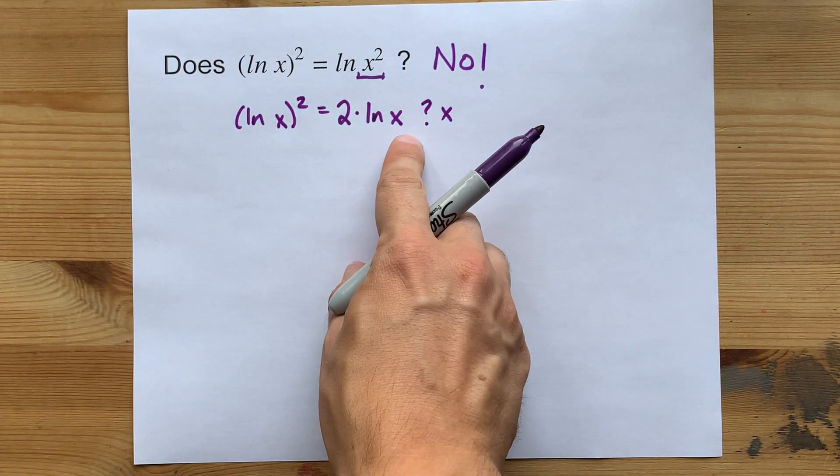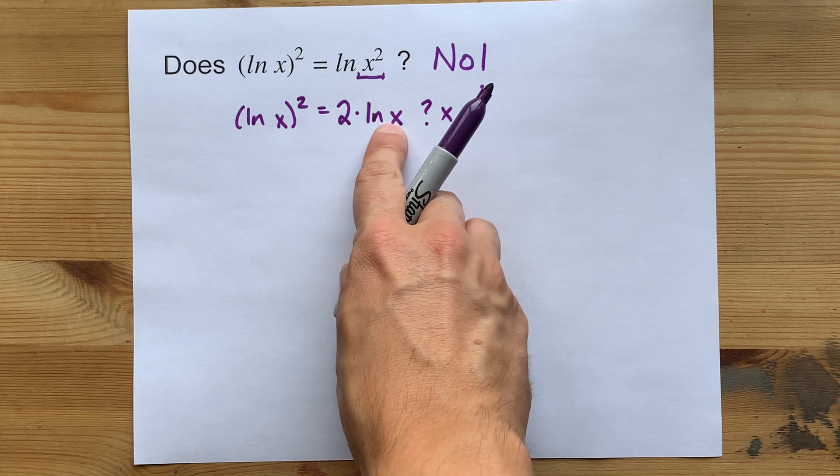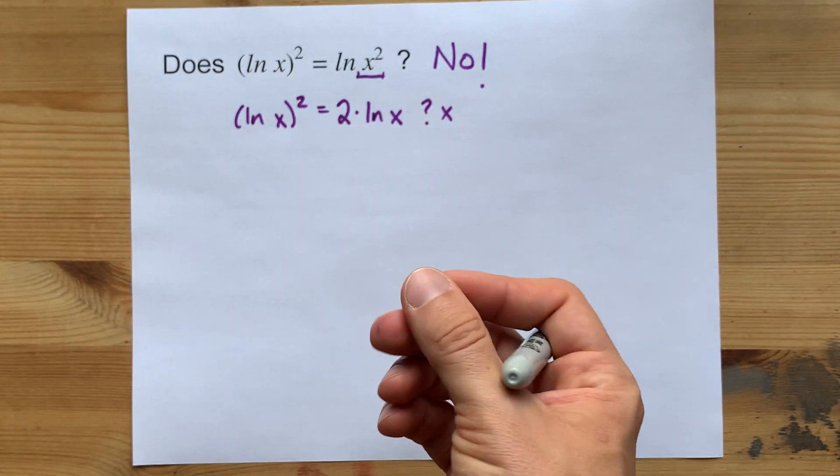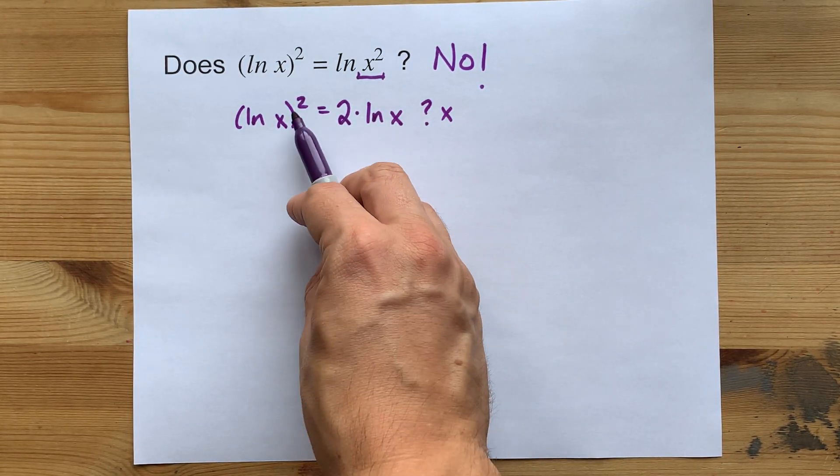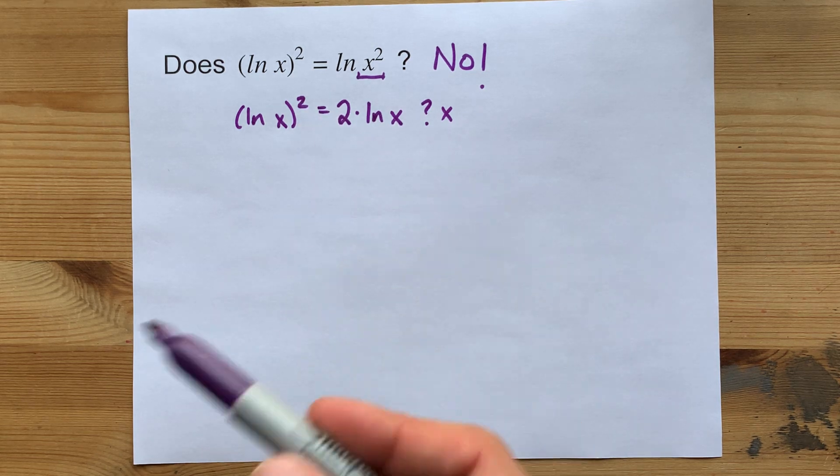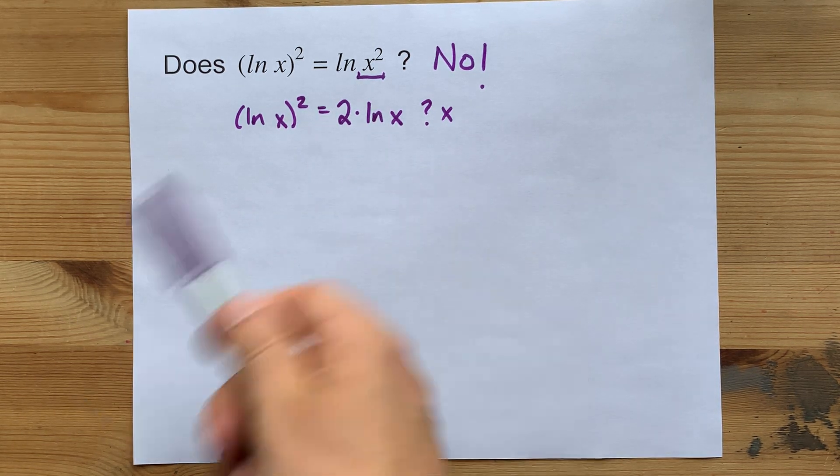Never, except for when this happens to give you a value of exactly two. Because two times two is two squared. That's just a coincidence though. Maybe zero as well, but whatever.